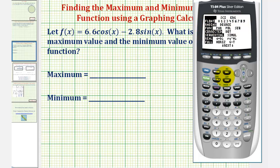Now we'll enter the function in y1. We'll press y equals and enter the function. So, we have 6.6 cosine x minus 2.8 sine x.